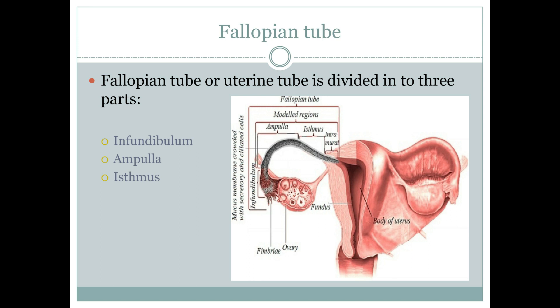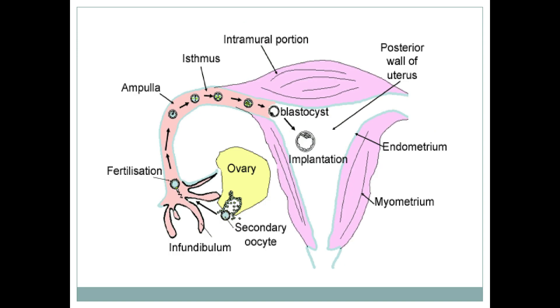The fallopian tube is made up of mucous membranes which have ciliated and secretory cells. The ciliated cells are present because the process of fertilization takes place here. The most important part of the fallopian tube is the infundibulum, where the whole story begins. After fertilization, these ciliated cells help the zygote move towards the uterus.